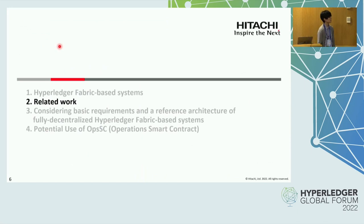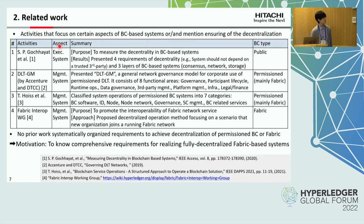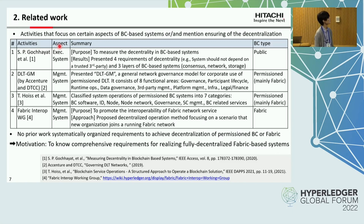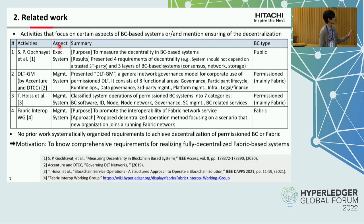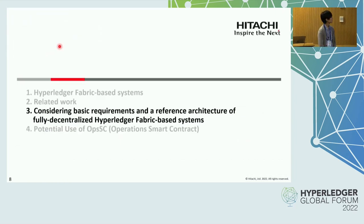The next topic is related work. We could find some activities that focus on certain aspects of blockchain-based systems and mention ensuring decentralization. However, there are no systematically organized requirements to achieve a decentralized permissioned blockchain or public blockchain. So our motivation is to know the comprehensive requirements for realizing fully decentralized fabric-based systems. In this part, we try to consider basic requirements and a reference architecture of fully decentralized fabric-based systems.